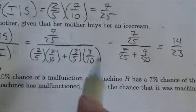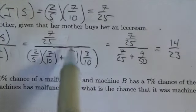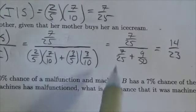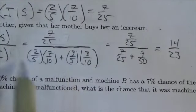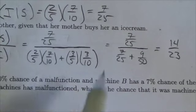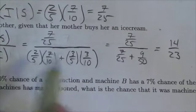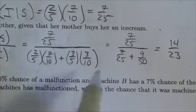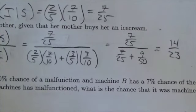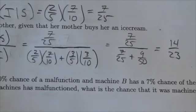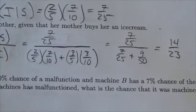So in this case, the subset of the probability where she goes and gets an ice cream is a little bit more complicated to figure out. We're going to see in a little bit that using a tree diagram makes questions like this a little bit easier.